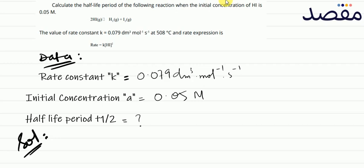Now we have data. So, we have constant k. Initial concentration 0.05 molality. Half-life period. We know half-life period.